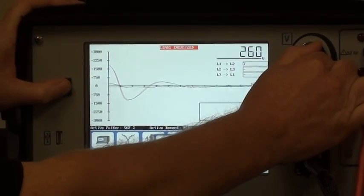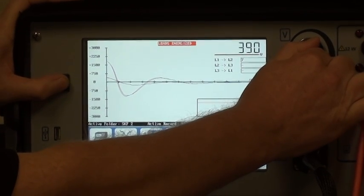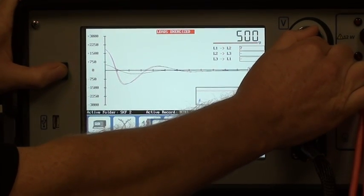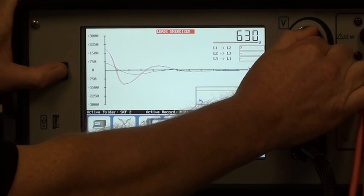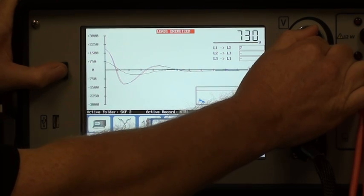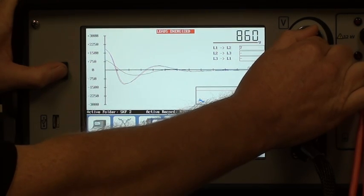We do this for all three phases, or if we had a field frame, a DC coil, we could simply just do the test once across the winding for the two leads.